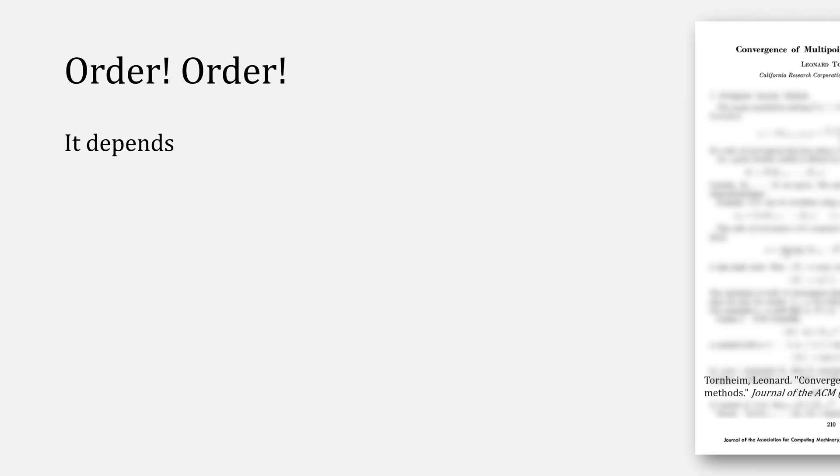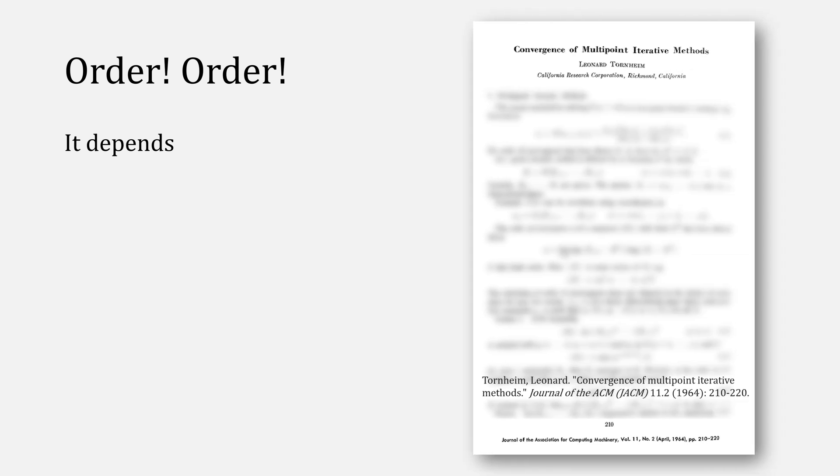Let's talk about the all-important order. For secant method in nonlinear systems, it actually depends. In Tornheim's paper, he's able to prove that the order depends on this function, meaning the higher the dimensionality, the slower it converges. With 1, it converges 1.618, normal secant method. But as you increase dimensionality, the order slows down.